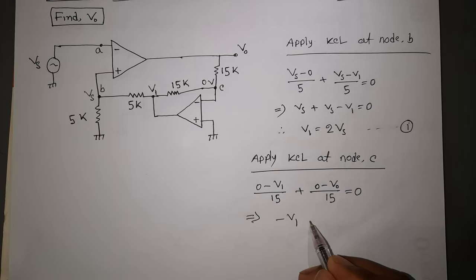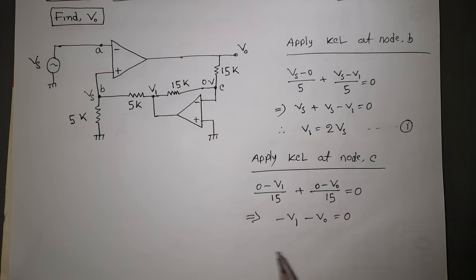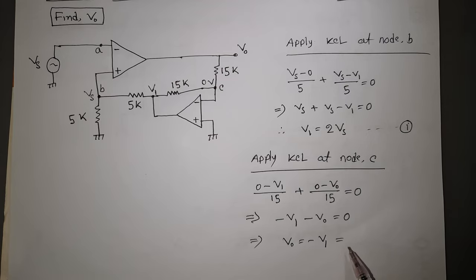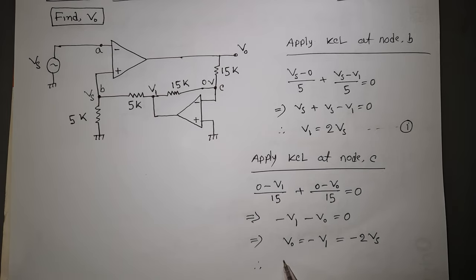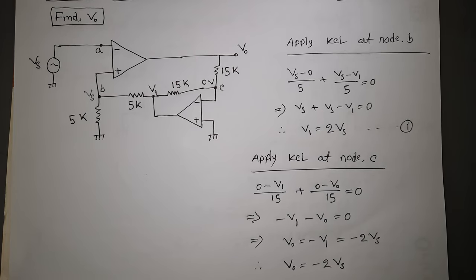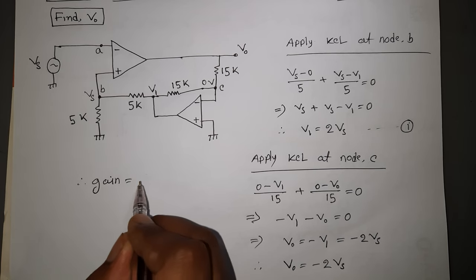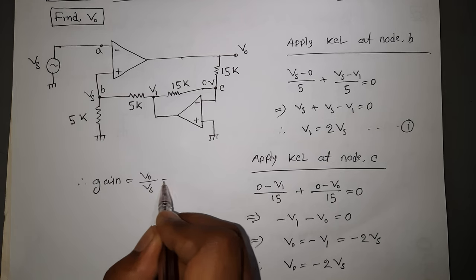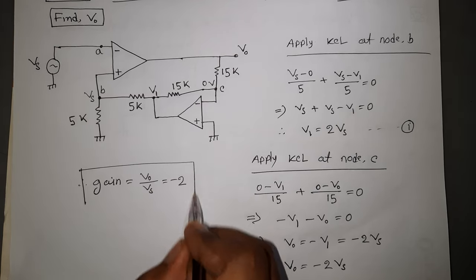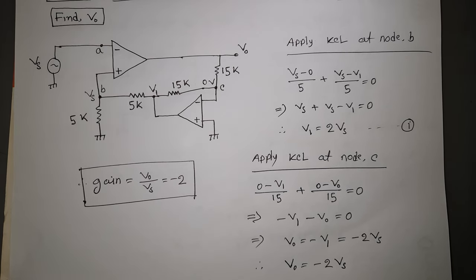Minus B1 minus B4 equals 0, so B0 equals minus B1 plus B2. The output voltage gain is Bs1 minus 2, so the gain is minus 2.